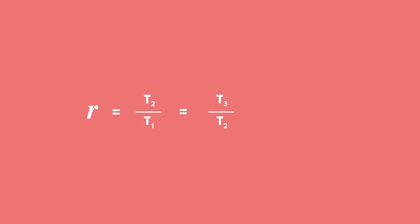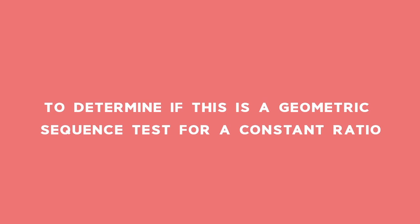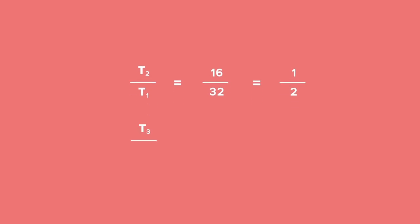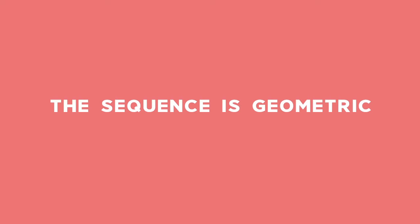In a geometric sequence, we know term 2 divided by term 1 is equal to term 3 divided by term 2, and so on. To determine if this is a geometric sequence, test for a constant ratio. Term 2 divided by term 1 is equal to 16 divided by 32, which equals 1 half. Term 3 divided by term 2 is equal to 8 divided by 16, which also equals 1 half. Therefore, the sequence is geometric and we can use the general term.